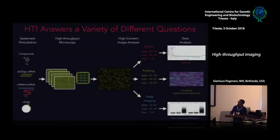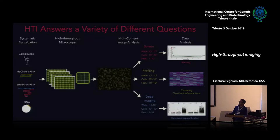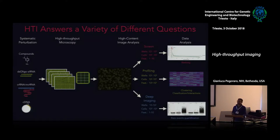Expanding on this vision of HTI, we have systematic perturbations that can be either compounds, oligo RNAs, and now we are seeing examples of arrayed screens with CRISPR-Cas9 reagents. We then have the high-throughput microscopy part in multi-well plates, and then high-content image analysis.